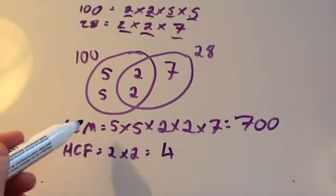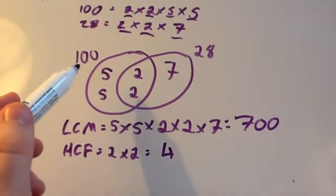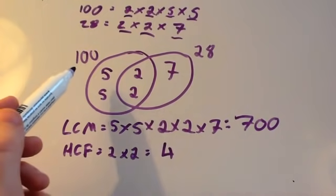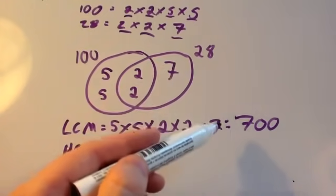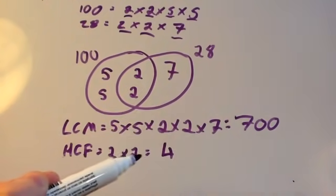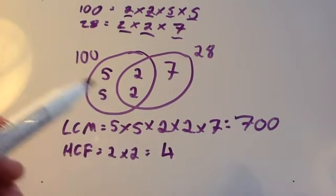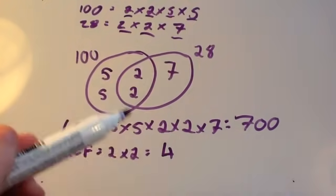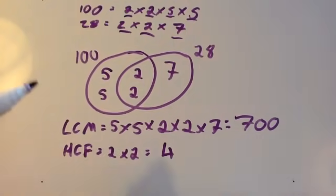So the lowest common multiple — the first number that appears in both the 100 times table and the 28 times table — is 700. And the highest common factor, the largest number that divides into both 100 and 28, is 4.